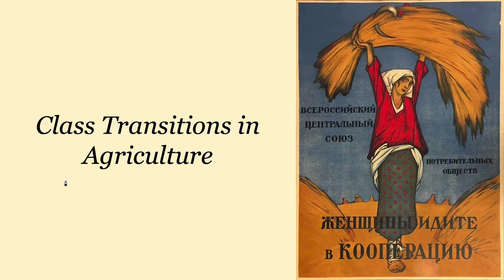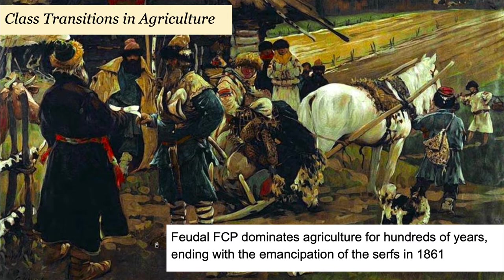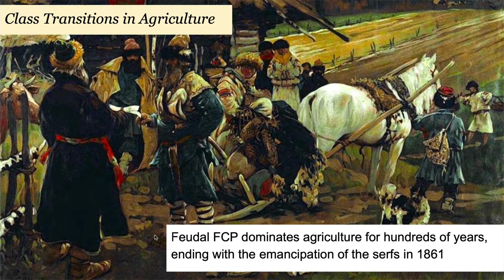Let's consider how the class structure changed in agriculture over the course of Soviet history — the class transitions that have occurred. The first is the abolition of feudalism, the feudal fundamental class process, which has lords and serfs and the complex ties of loyalty and obligation between these groups, with the serfs performing the necessary and surplus labor and the lords appropriating it.